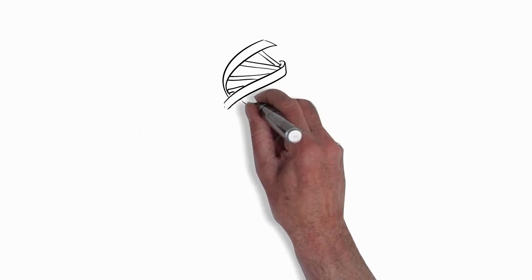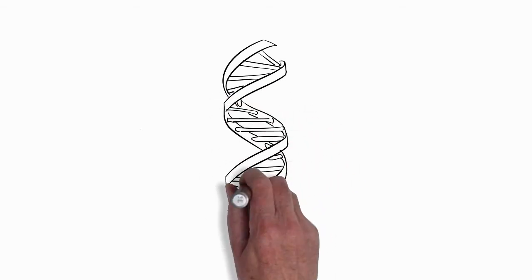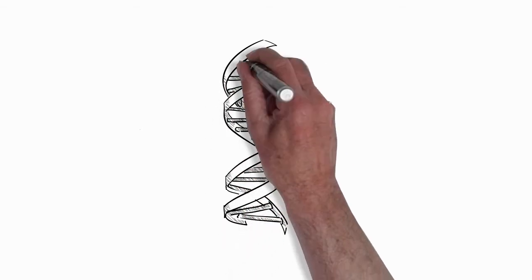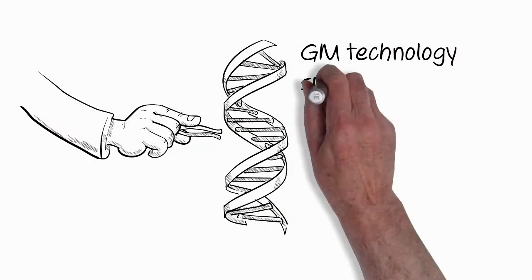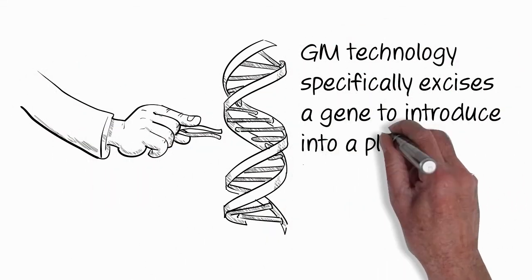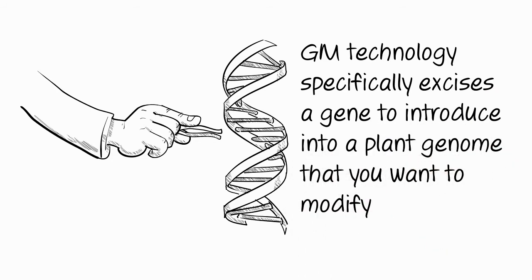Whereas GM technology, you specifically excise a gene from a genome and you incorporate that gene into a plant that you want to genetically modify. Whereas this is much wider, it's how things happen naturally.